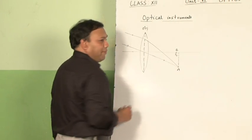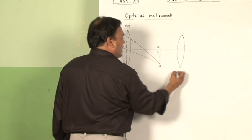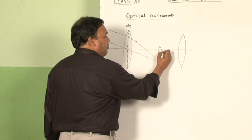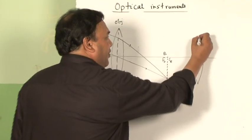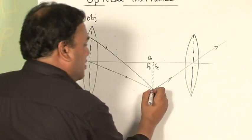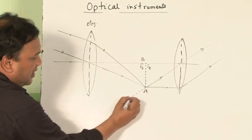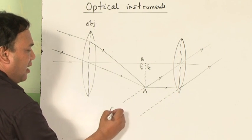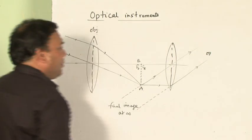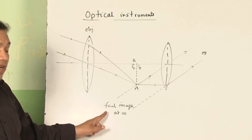We will use a second convex lens. If the position of the second convex lens is so adjusted that this first image is exactly at the focus of the eye lens - meaning this point is both F-O and F-E - then we will get the final image at infinity. Take the first ray passing through the center of the lens, it goes straight. The second ray of light parallel to the principal axis emerges parallel to the first ray. If these two are extended, we get the final image at infinity. This is the construction and working of the astronomical telescope with the final image formed at infinity.